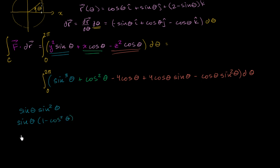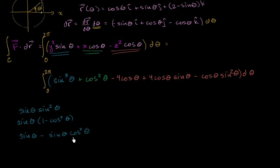So this is the same thing as sine of theta times (1 minus cosine squared theta). If we multiply this out, we get sine theta minus sine theta cosine squared theta. This is much easier to integrate — although it looks like a more complicated expression — because it's easy to take the antiderivative of sine theta. And now it's easy to take the antiderivative of the second term, because we have the derivative of cosine theta sitting right there, giving us cosine cubed theta over 3. We're essentially doing u-substitution.